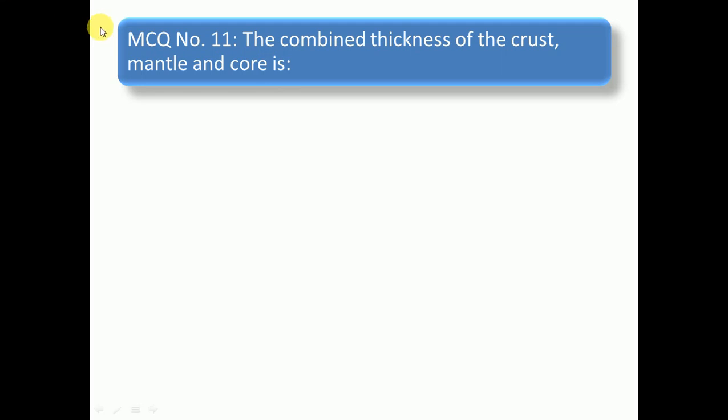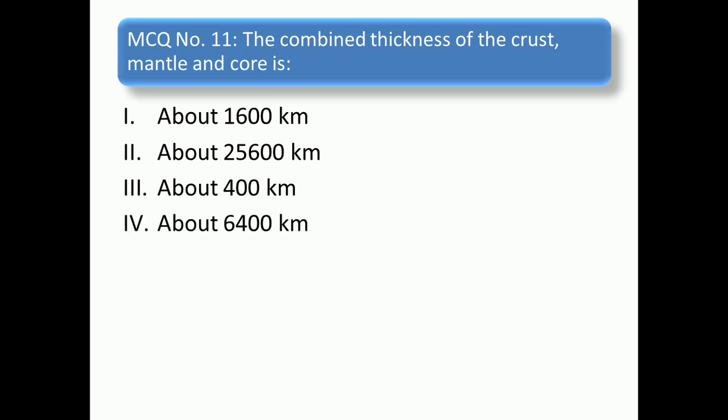MCQ number 11: The combined thickness of the crust, mantle, and core is - the options given are about 1,600 km, about 2,900 km, about 400 km, about 6,400 km. So the right answer is option number 4: 6,400 km.